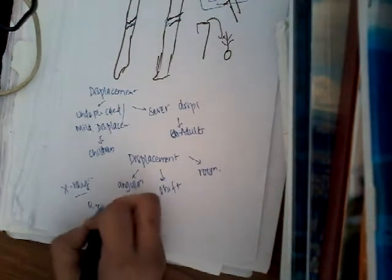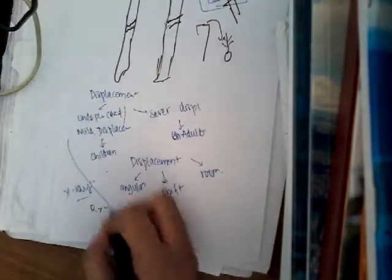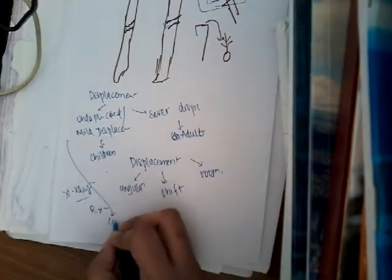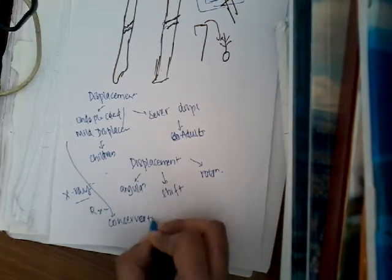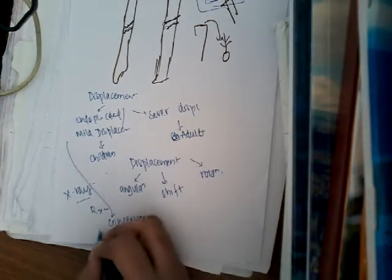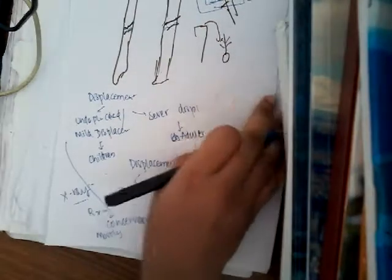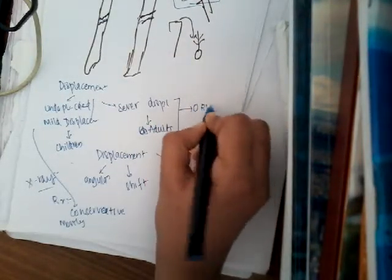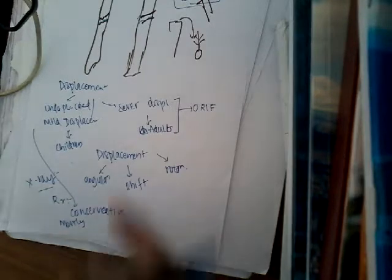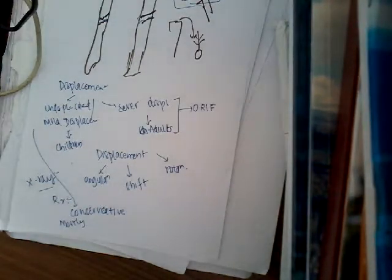Now, how are you going to treat it? For treatment, mostly we do conservative treatment. If it's undisplaced or mildly displaced, we will just do conservative treatment. Only in adults with severe displacement will you do open reduction and internal fixation — only in adults, and that too in severe displacement cases.